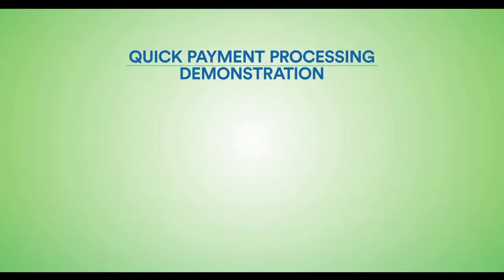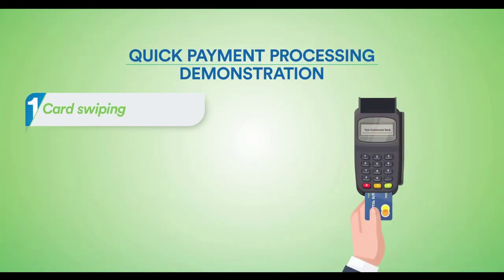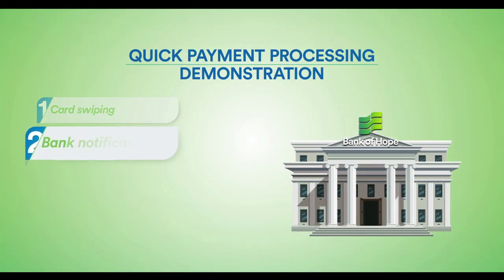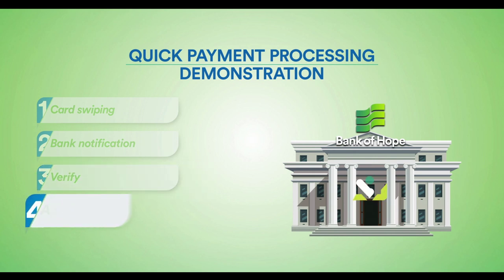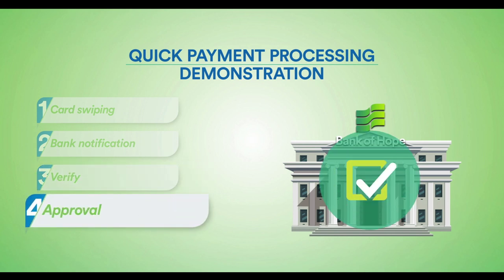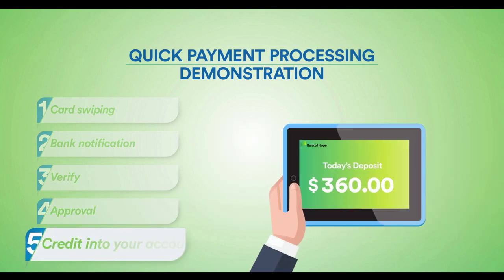Here's a quick look into merchant processing. Your customer swipes their card, and the data is sent to the customer's bank right away. The customer's bank verifies the funds are available and approves the transaction. Your card machine receives the approval confirmation, and the funds are directly credited into your Bank of Hope business account.